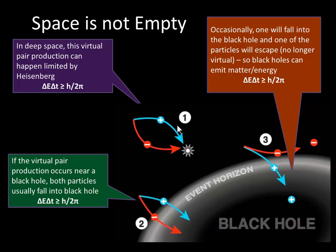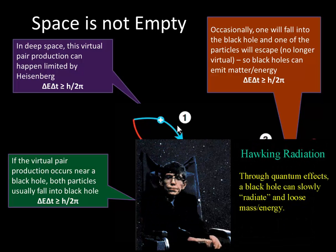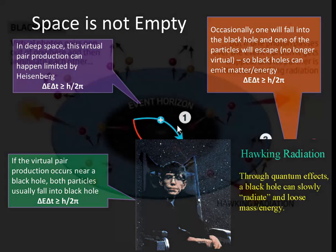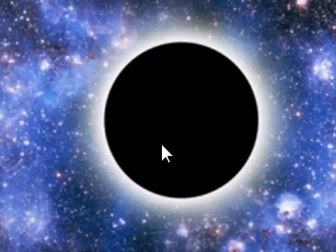Occasionally, one will fall into the black hole and the other will actually escape, which means it's no longer virtual. It can be observed. So this can happen. This was predicted by Stephen Hawking. And he said that black holes basically can emit matter or energy. And he made this prediction that black holes actually emit radiation, don't swallow everything. They're actually able to emit radiation. Which means that the black hole is not actually black.